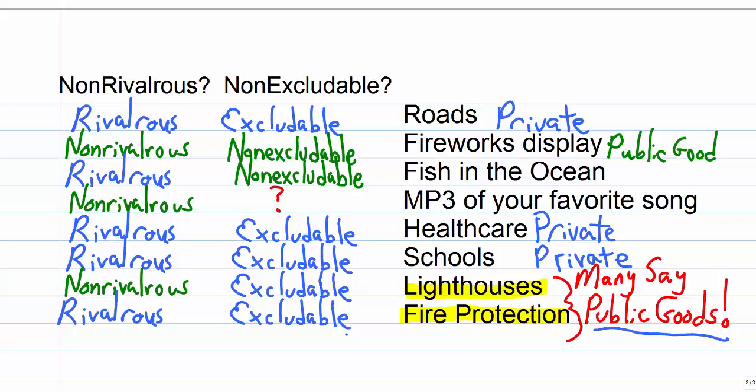Roads I would call a private good because they're rivalrous. You need more lanes or traffic's going to slow down. They're also excludable because you could have a toll road and keep cars off if they didn't pay. So they're private goods.